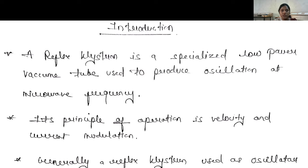First of all we have to discuss the introduction of Reflex Klystron. Klystron is a vacuum tube which is either used as an amplifier or an oscillator. Reflex Klystron is actually an oscillator which is used to produce low microwave frequency or it provides low power. It is not having 100% efficiency. If any device requires a low frequency oscillator then we can use Reflex Klystron. Its principle of operation depends upon velocity and current modulation.